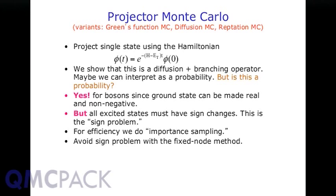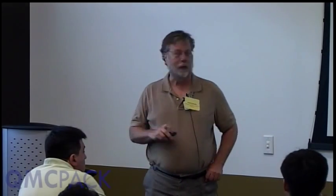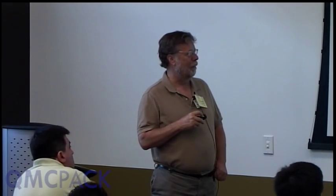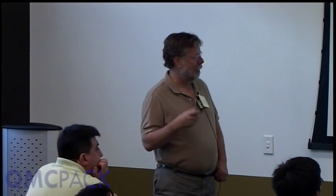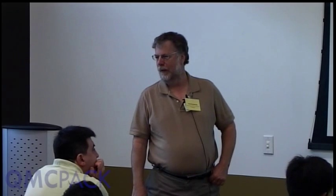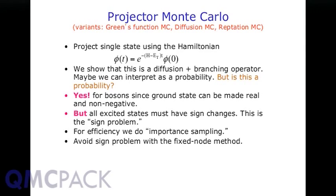If there were an i here, this would be real-time evolution. Without the i, this is imaginary time evolution. We start with an assumed wave function at time equals zero, and it evolves according to the Heisenberg picture, except in imaginary time. We put a zero of energy called the trial energy E_T — that's just a shift in energy needed to fix the normalization. This operator is called the many-body density matrix operator.